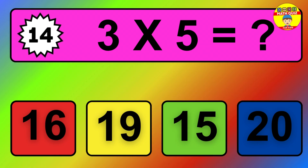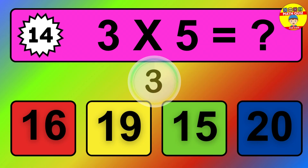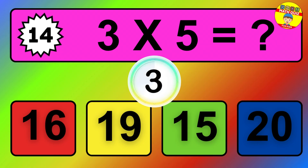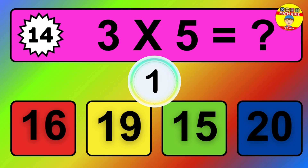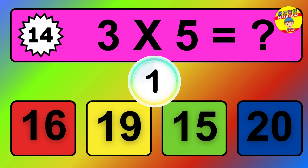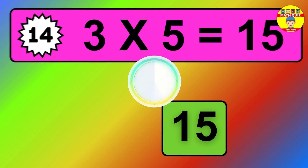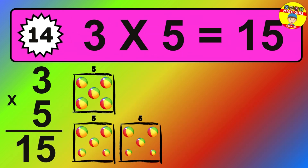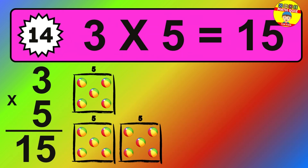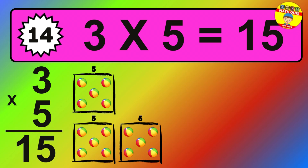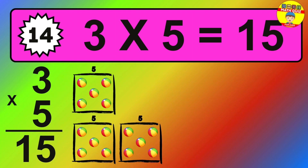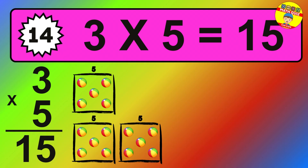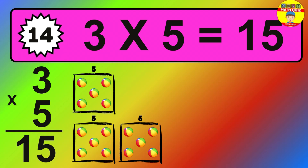Question fourteen: three times five equals what? The answer is: three times five is 15. To calculate, we have three groups with five balls each one. So how many balls do we have? 15 balls.